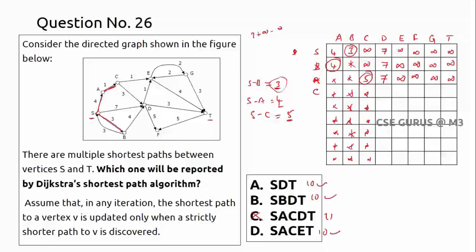Now process C's neighbors. S to D via C: S-C=5, C to D=3, so 5+3=8. Previous value is 7, which is shorter — no update. S to E via C: S-C=5, C to E=1, so 5+1=6. Previously infinity, update to 6. S to F, G, T via C: all infinity. Minimum remaining is 6, so S to E = 6 is confirmed.